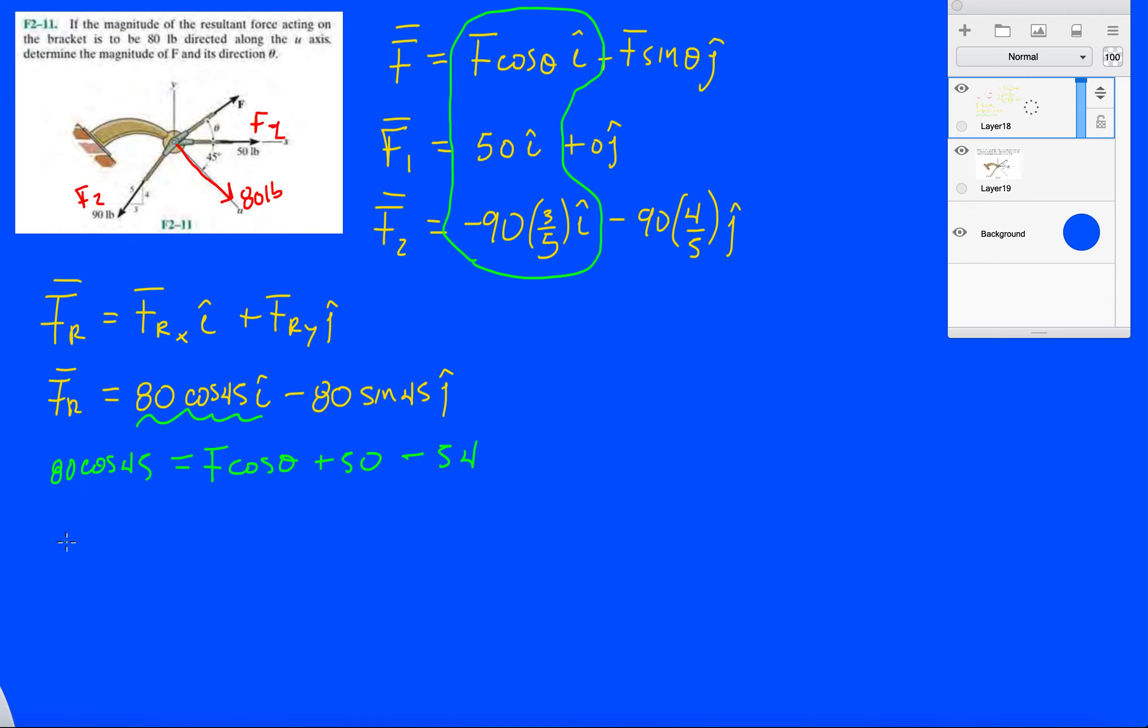And then the y-axis, it'll be minus 80 sine 45, and that is F sine theta plus 0 minus 72. Let's just get the result of that, 18 times 4, minus 72.